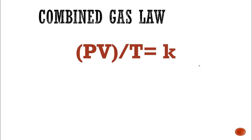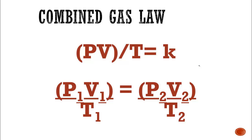So PV over T equals K. Now can we do the same thing we did last time? Since everything is equal to K, we can have initial and changed conditions. Of course we can. The trickiest thing with this equation — we're going to work it the same way. We've got equal fractions, so we cross-multiply and divide. What's going to trip you up is when your X, let's say, is this V — one of your variables on the top.